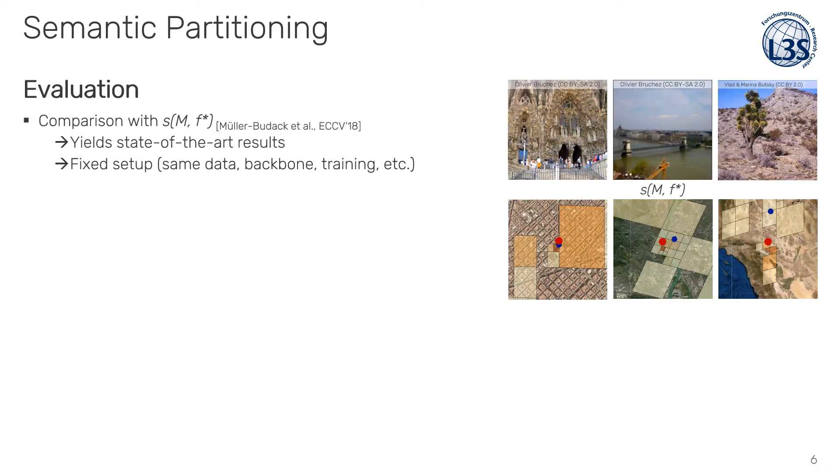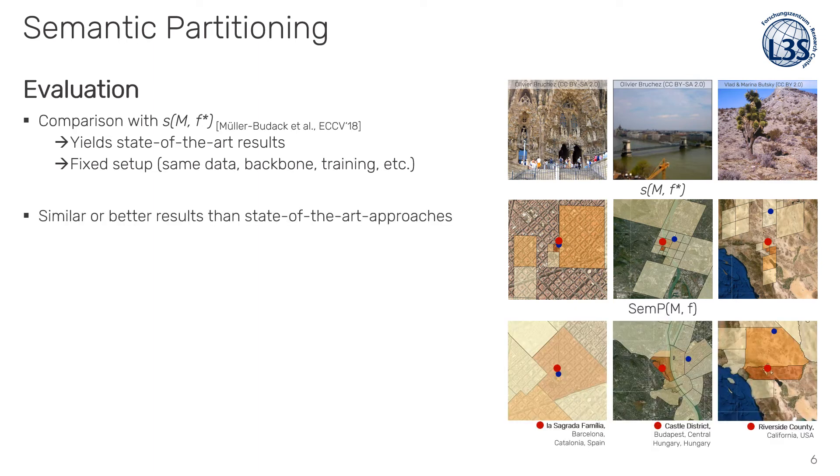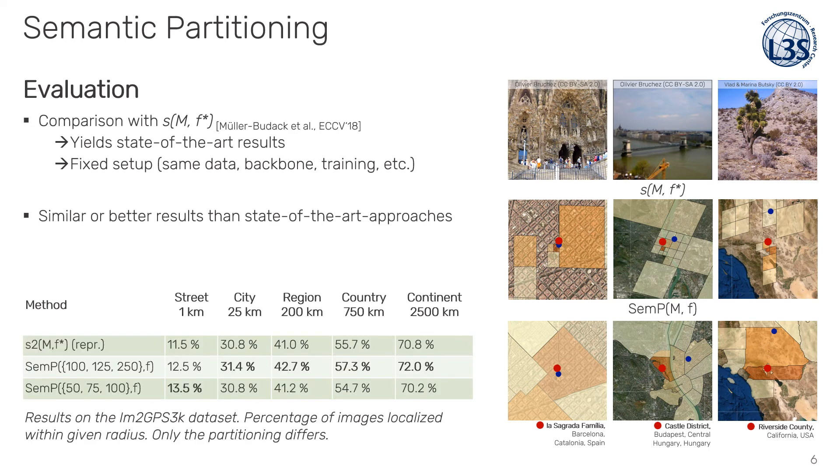For fair comparison with state-of-the-art, we compare a multi-partitioning S2 model from Muller-Budack et al. while fixing the entire setup. In particular, we use the same data, CNN backbone, the same training parameters and comparable number of classes. Experimental evaluation have demonstrated that we achieve similar or better results than other approaches on common benchmark datasets. While at the same time, the output provided to the user feels more comprehensible and better reflects specific locations or areas on the world.